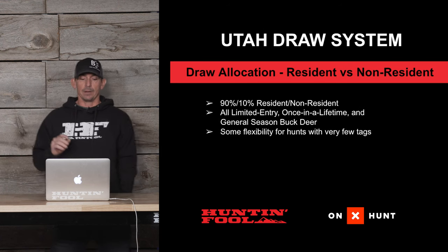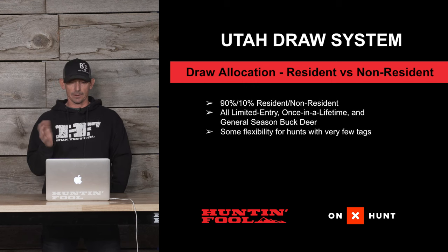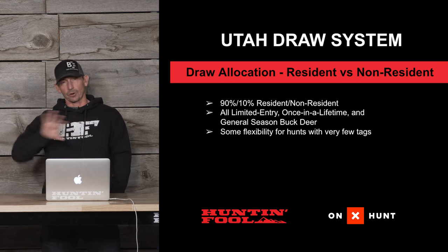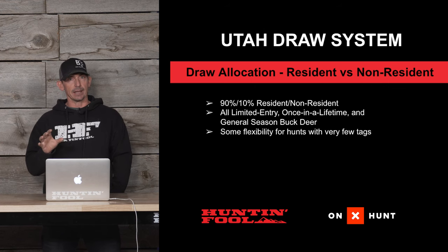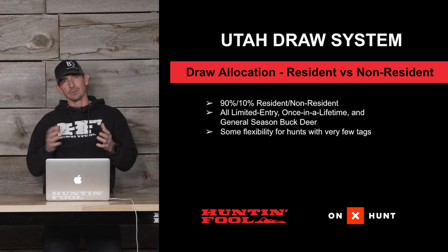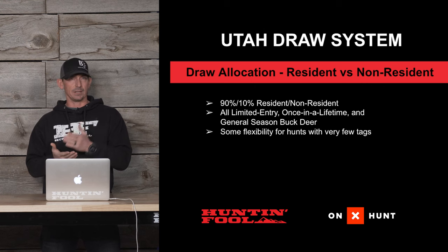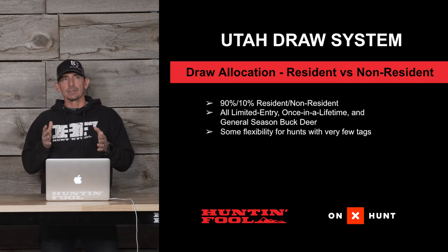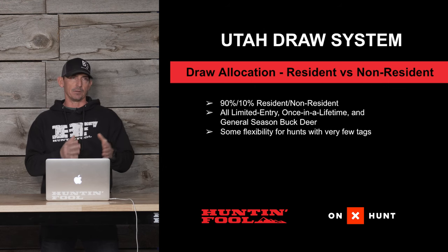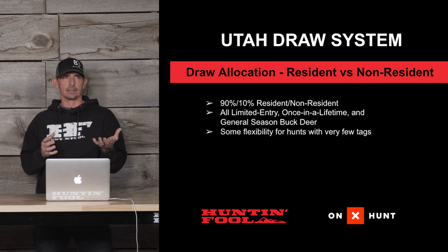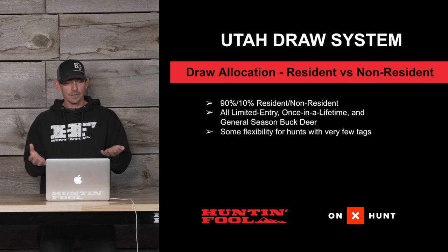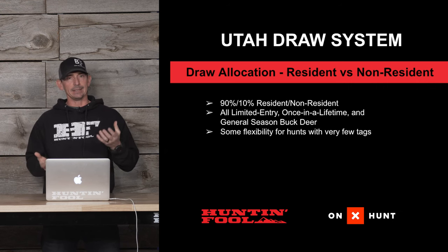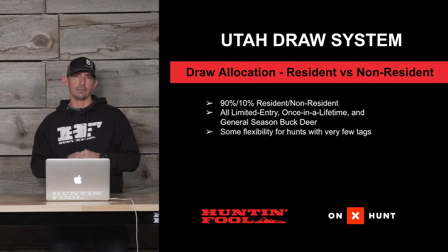On the allocation side, Utah has a 90/10 resident to non-resident quota across the board. There is some variation: for species with very limited tags — like sheep, moose, goat, or highly sought-after elk tags — the 90/10 isn't always exact. The division is allowed some leeway. For example, you might see 15 resident moose tags and two non-resident tags, which is over 10%, but they try to hold that 90/10 split while getting more non-resident permits out there.